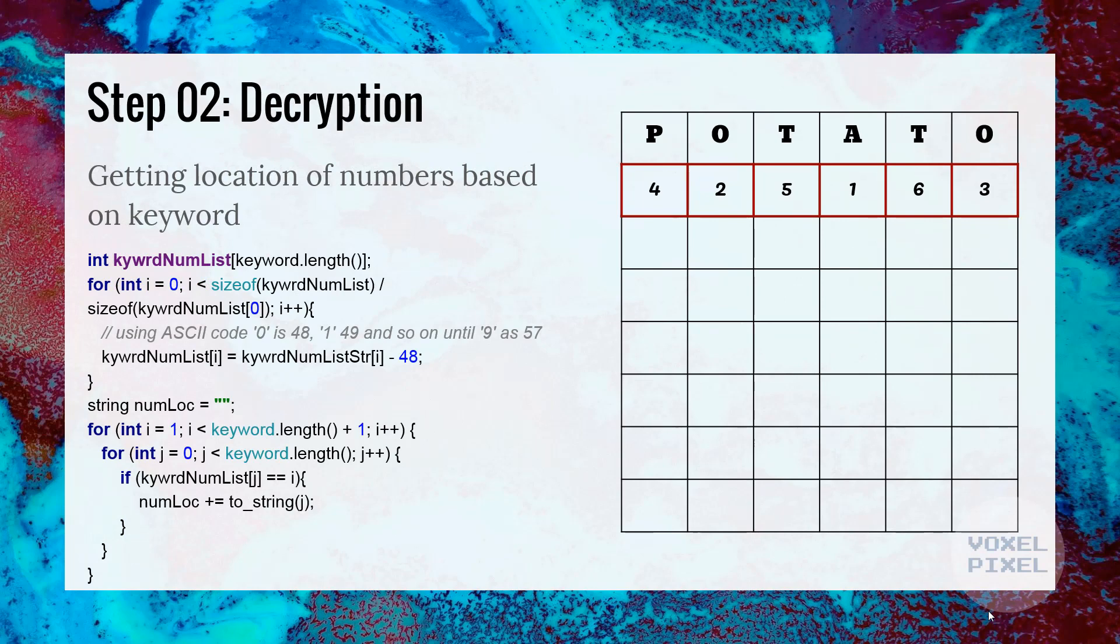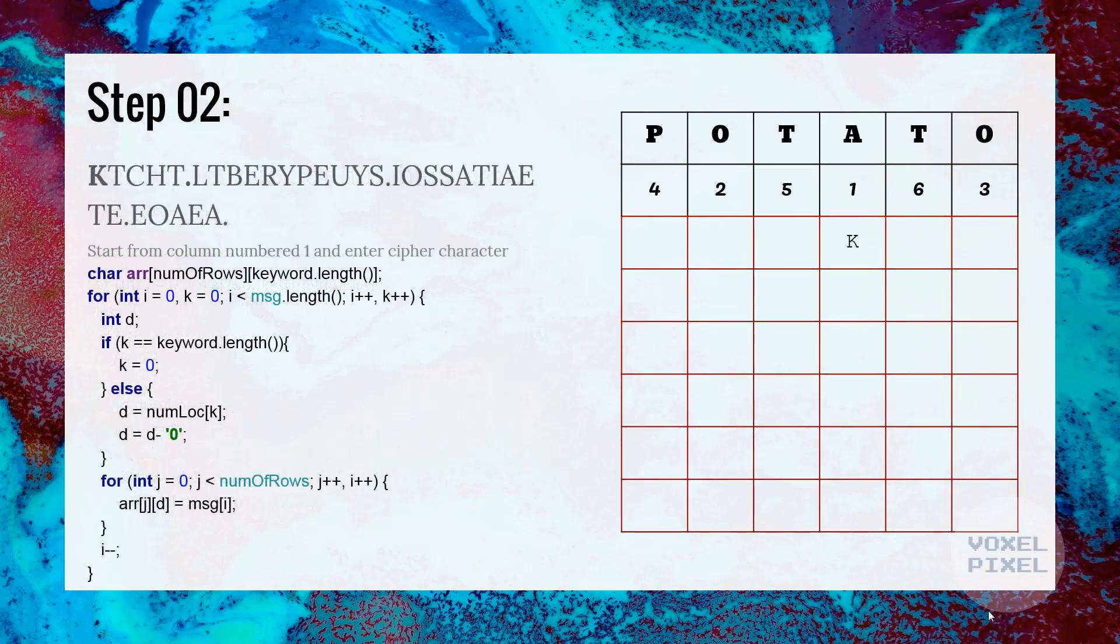Next, we will get the location of numbers based on the keyword, as we did in encryption. Now, we will begin by column number 1 and putting ciphertext into columns one by one.